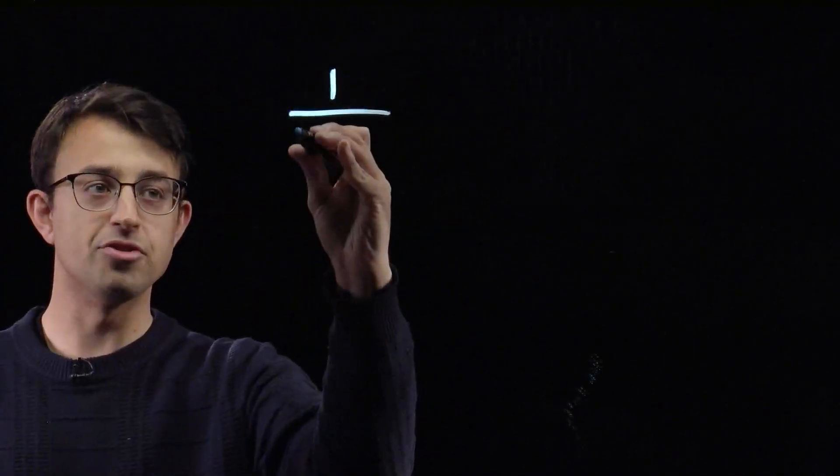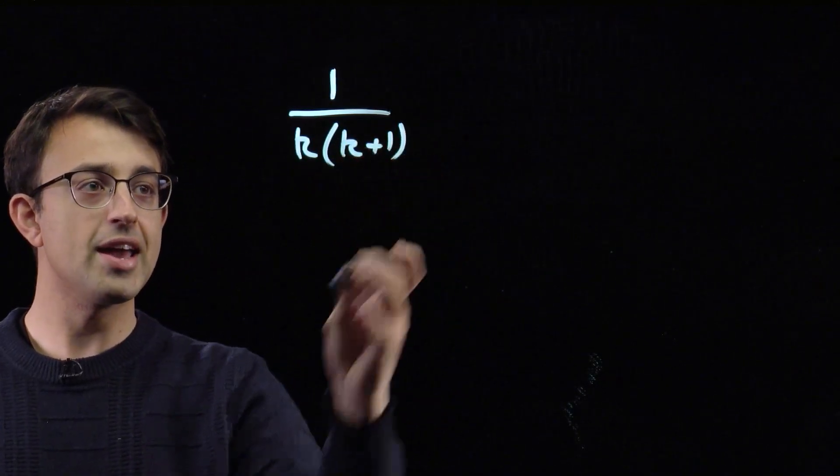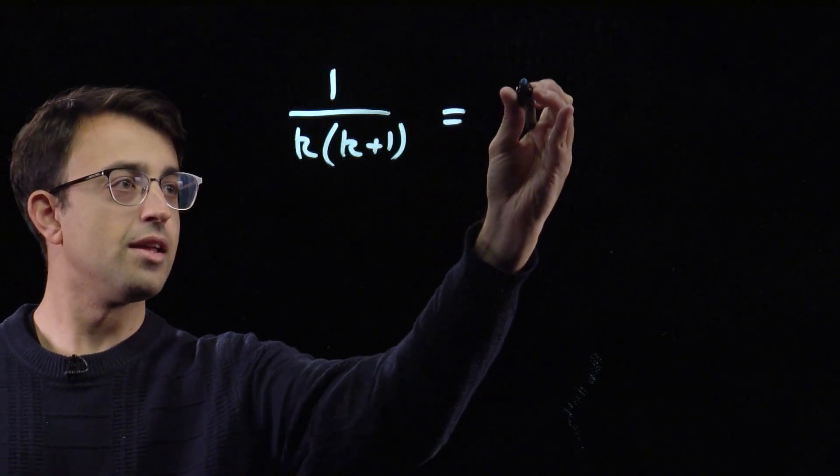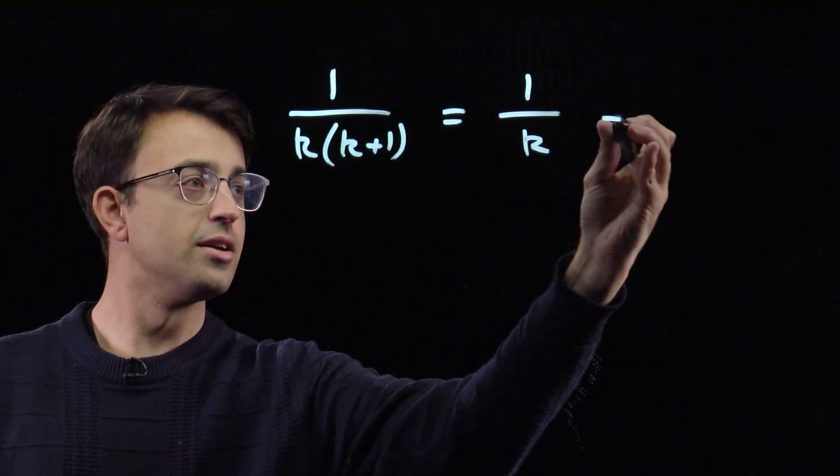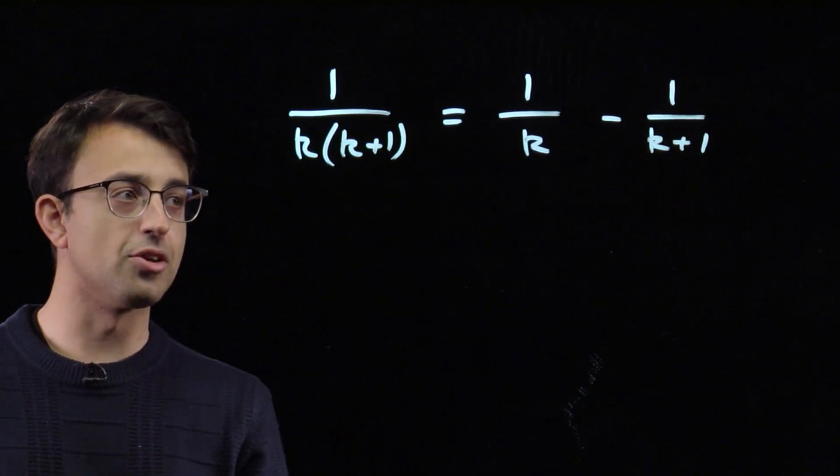The first of these is a neat way of rewriting numbers of the form 1 over k times k plus 1 as 1 over k minus 1 over k plus 1.